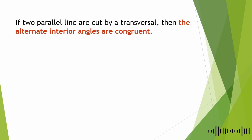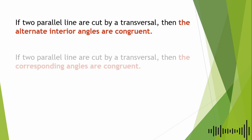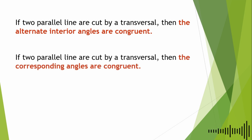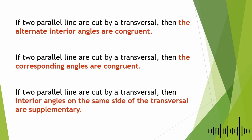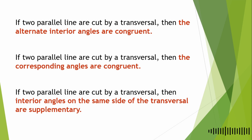Additional theorems: If two parallel lines are cut by a transversal, then the alternate interior angles are congruent. If two parallel lines are cut by a transversal, then the corresponding angles are congruent. Interior angles on the same side of the transversal are supplementary — meaning they have a sum of 180 degrees.